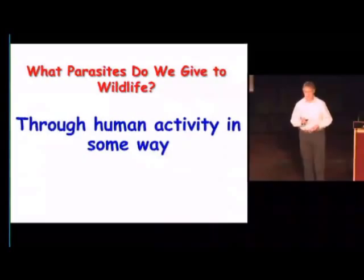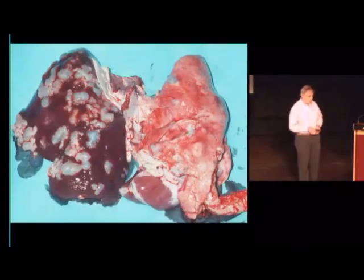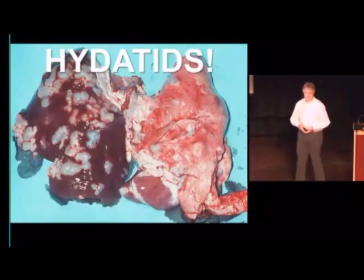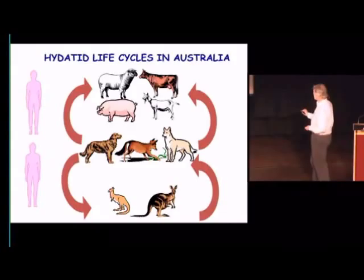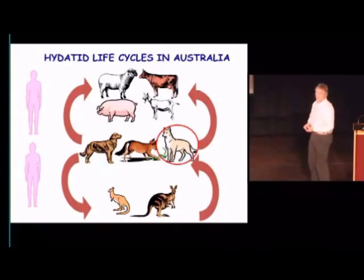I'm sure most locals in the audience will recognise this — this is hydatids in the liver and lungs of a sheep. Hydatids is a very good example of a parasite that we have given to our wildlife in Australia. Not so much in Tasmania, because there we don't have the dingo and so we don't have that important predator, whereas on the mainland a major impediment to controlling hydatid disease is the presence of the cycle in wildlife.